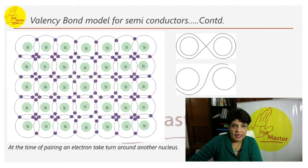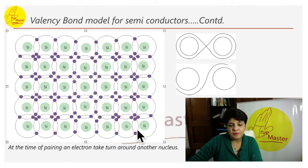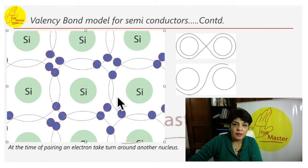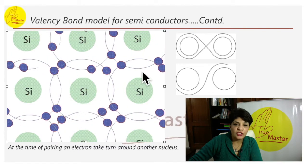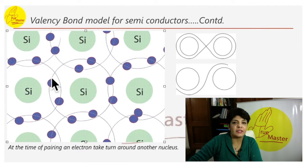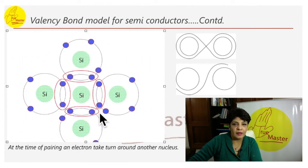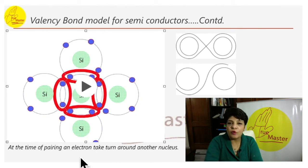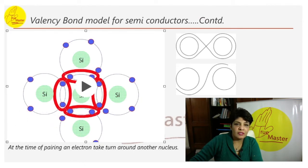Let me show you in an animation exactly how the bonding is taking place. This is a silicon — this is how the pairing is going on. It is being shared, and at a point there can be eight electrons. This bonding is called covalent bonding.